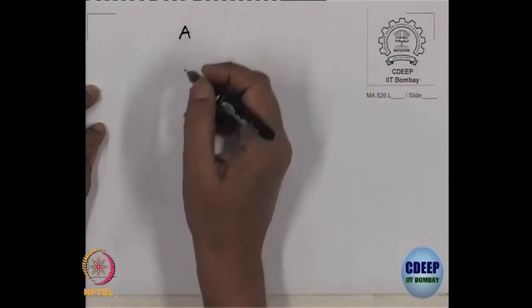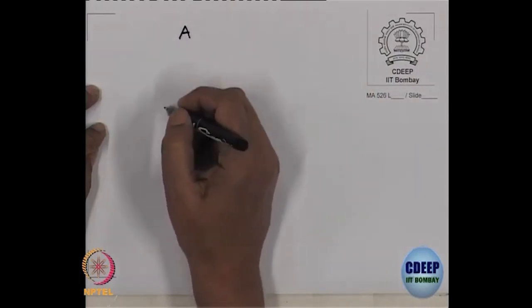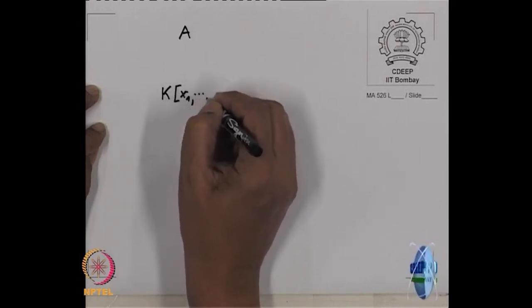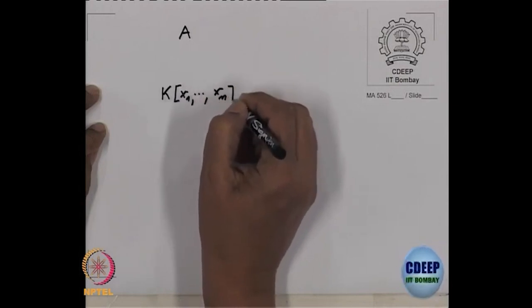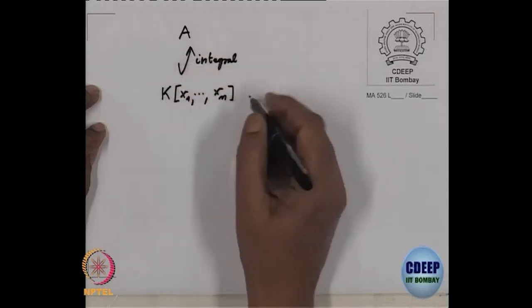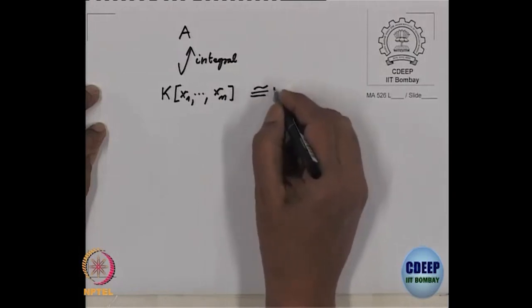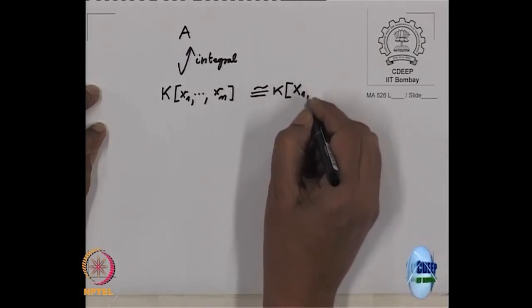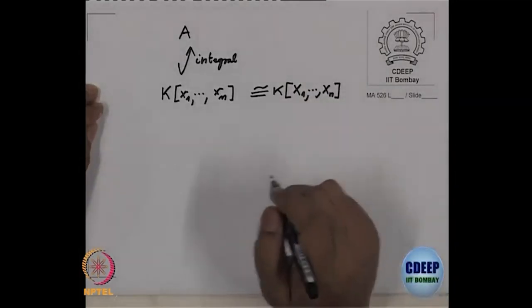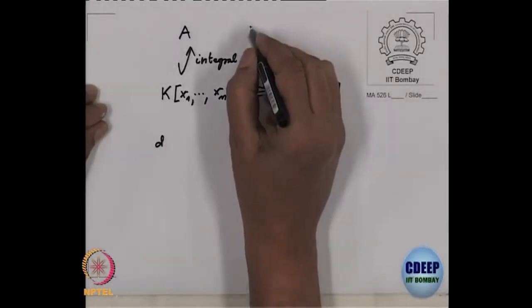Let me remind you the normalization lemma — what did we prove? We proved that if I have a finite type K-algebra A, then I can find elements which are algebraically independent, and this extension is integral. And this is the polynomial algebra because they are algebraically independent. So what we have just proved is the dimension of this affine K-algebra.